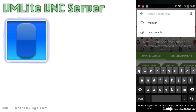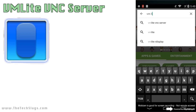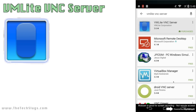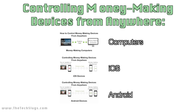I already released a three-part video series where I talk about controlling money-making devices from anywhere. And in the Android one, I didn't mention VM Lite VNC Server — I said Mobizen was my favorite. Remote access is such a great thing; it's really vital so you can keep your routine going even while you're away from the house. It gives you complete control, freedom, and flexibility. I'll leave a link on screen — you can click to watch one of the three parts: computers, iOS, and Android devices. If you're on mobile, I'll leave all the links in the description.